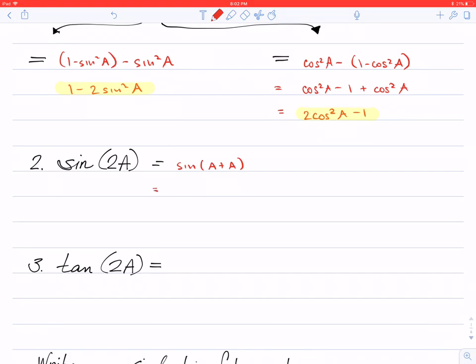Using our sine sum identity that we learned back in section 9.2, we know that this will be sine of A times the cosine of A plus the sine of A times the cosine of A. So I have two terms here being added, and these two terms are identical to each other. So I'm allowed to combine like terms. So this is going to be two of the same term: two sine A cosine A.